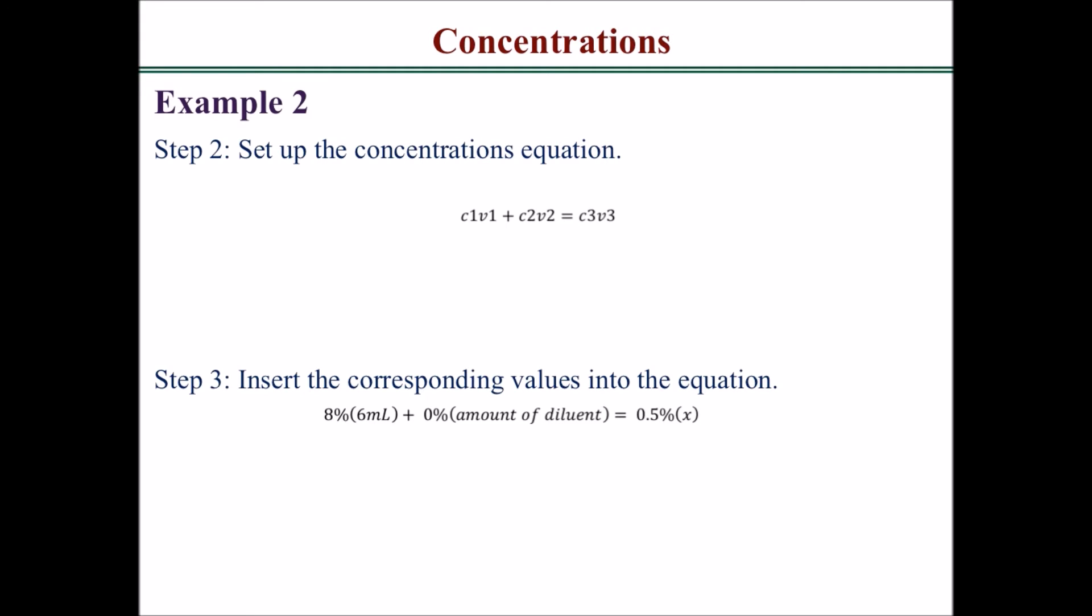Insert the corresponding values into the equation. So you have 8% weight by volume, and they said there was 6 milliliters of injection. You have 0% diluent—diluent has zero percent drugs in it. You don't know how much diluent you have; however, the percentage is zero, so when you multiply this part it will always be zero. So you have 8% times 6 milliliters. This cancels out, equals 0.5% times x.